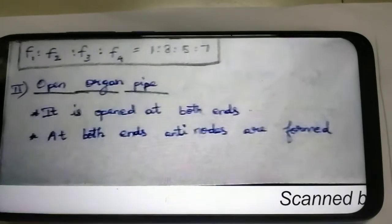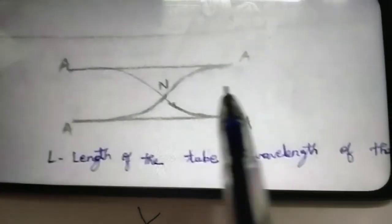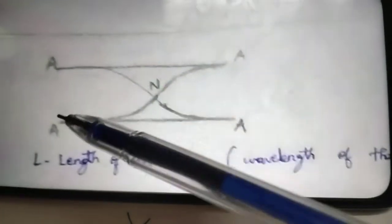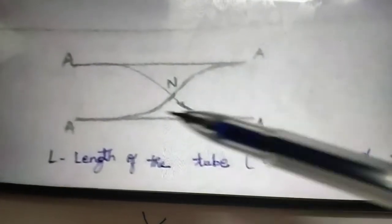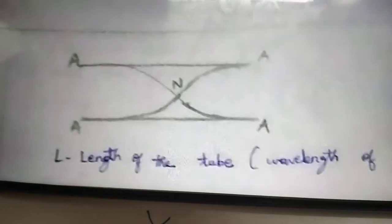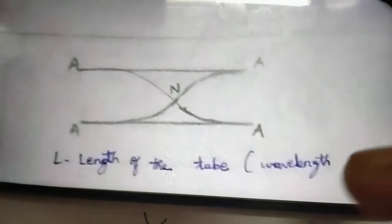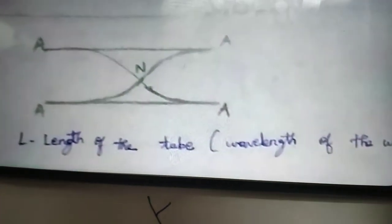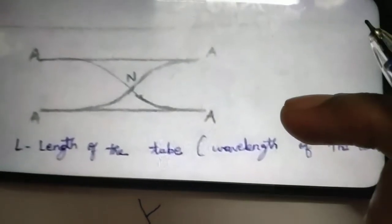Now look at the diagram. Here is the open organ pipe. The antinodes are formed at the open ends. In the center, the node is formed. The node is zero or minimum displacement. The antinode is maximum displacement from the mean position.